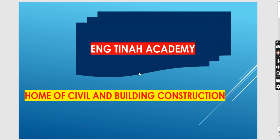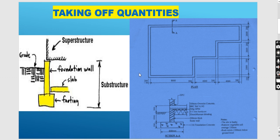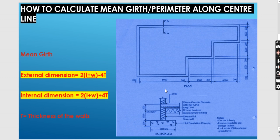We want to look at an element in substructure works. And remember, we said substructure works is anything that is below ground, below ground level. So on this video, we want to look at how to calculate mini guards. When we are talking about mini guards, we are talking about perimeter along the center line.